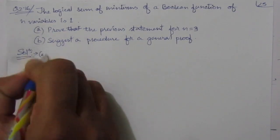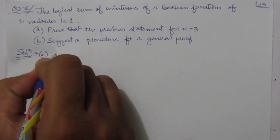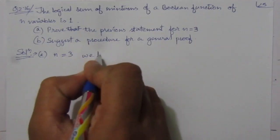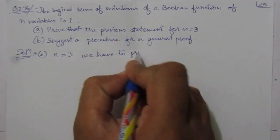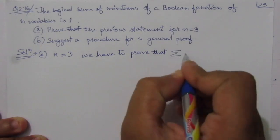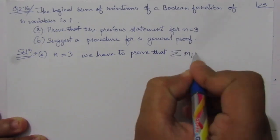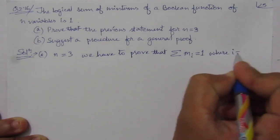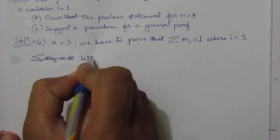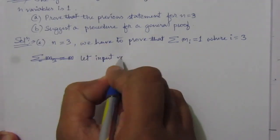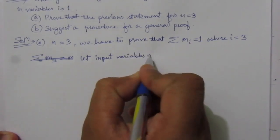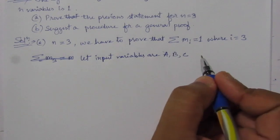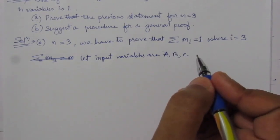Now first solve for part A. We are given that n equal to 3, and we have to prove that the sum of m_i equals 1, where i equal to 3. Let the input variables be a, b, and c, because we are given that we have to consider 3 variables.